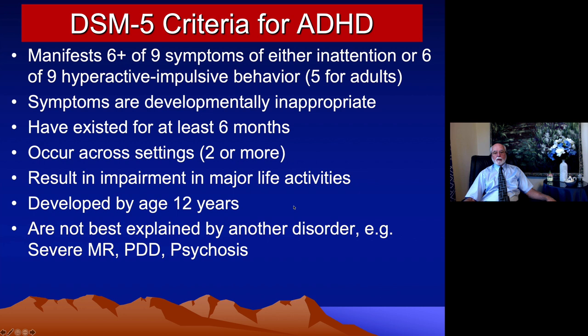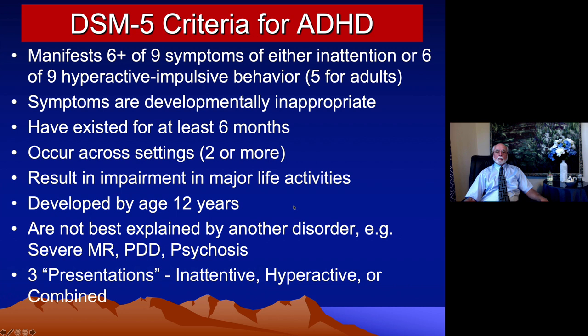We also like to exclude other disorders that might explain the inattention, such as psychosis, autism spectrum disorder, or intellectual disability. What is specific to ADHD and rarely seen in other disorders is not so much inattention, but chronic impulsiveness — being uninhibited with very poor self-regulation or executive functioning. ADHD is one of the few, if not the only, disorder that has chronic deficits in inhibition dating back to childhood or adolescence. In other disorders where we see impulsiveness, such as bipolar disorder, the impulsiveness is often episodic, occurring only occasionally.